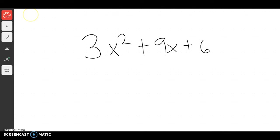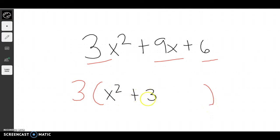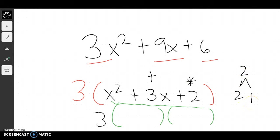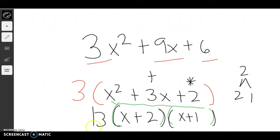Again, my first step is to figure out what they multiplied everything by, which in this case is 3. So I'm going to take out my 3, which leaves me with x squared, a 3x, and a 2. Now I have to think about what can break up this inside portion — what multiplies together to give me 2 but adds together to give me 3. The only factors of 2 are 2 and 1, and 2 plus 1 gives me 3. So that works out, and that would be my final answer.